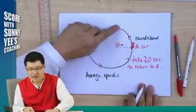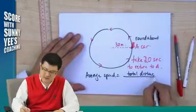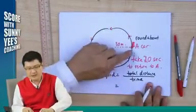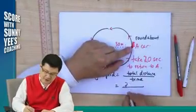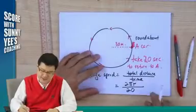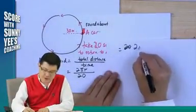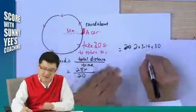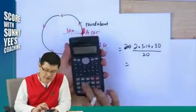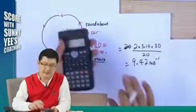What is the average speed from A, going all the way around back to A? Average speed equals total distance divided by total time. The distance is the circumference of a circle: 2πr. Substituting: 2 × 3.14 × 30 ÷ 20 = 9.42 meters per second. This is the average speed.